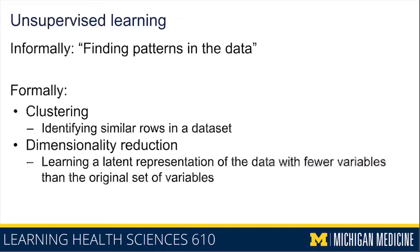You could imagine how if your dataset only has three columns — say age, presence of hypertension, and presence of diabetes — you could scan through and probably identify clusters yourself without even needing an algorithm. If asked to find three or four clusters, you could identify combinations like older age with hypertension and diabetes, younger age without either, and a third cluster with some mix of those variables.